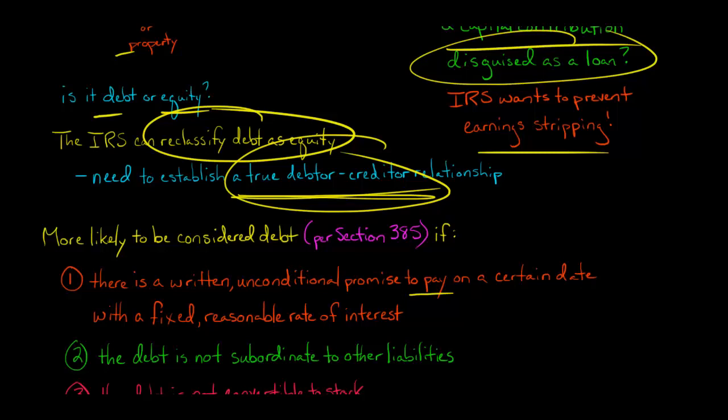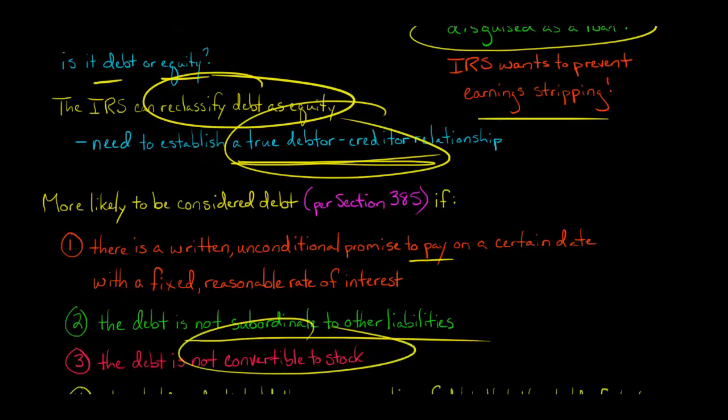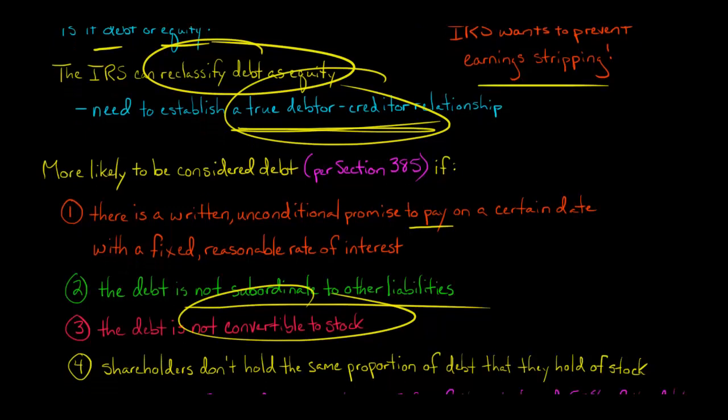We want to make sure the debt is not subordinated to other liabilities and not convertible to stock. If it's convertible to stock or subordinate to other liabilities, that makes it seem like: is this really a loan? Is the corporation really going to be forced to pay this back?